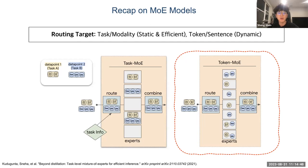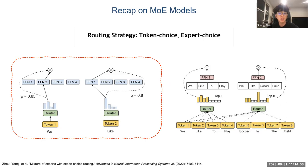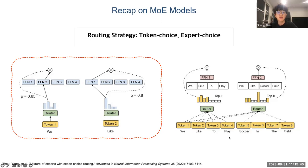Another routing strategy difference is whether we let tokens choose the router or the router choose the tokens. Generally, we let each token choose which expert to route to — this is called token choice. On the other spectrum, for encoding we could ask the router to see all tokens and decide which tokens to process, which prevents token dropping. But this setting is tricky to apply to autoregressive decoding, so generally we still use token choice.